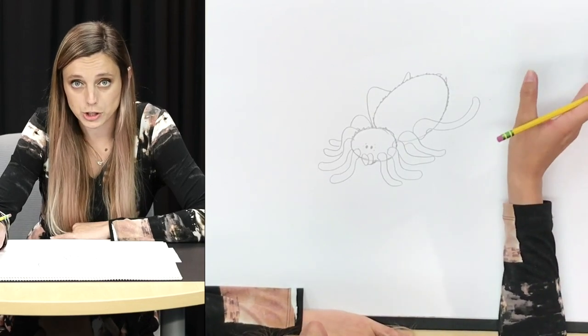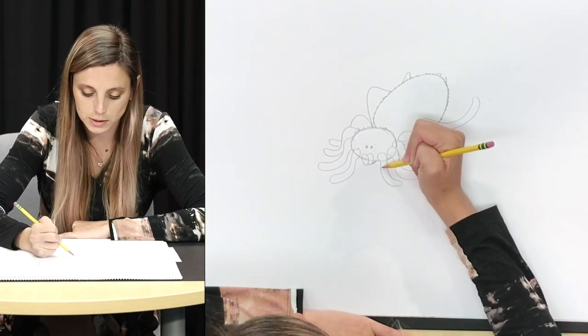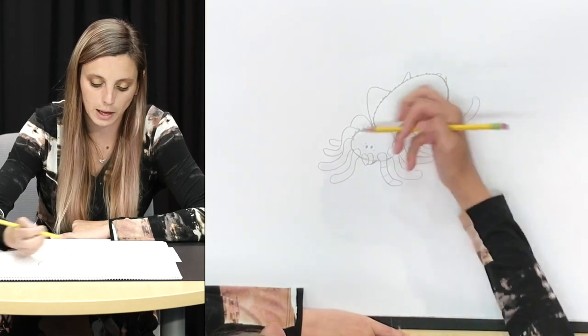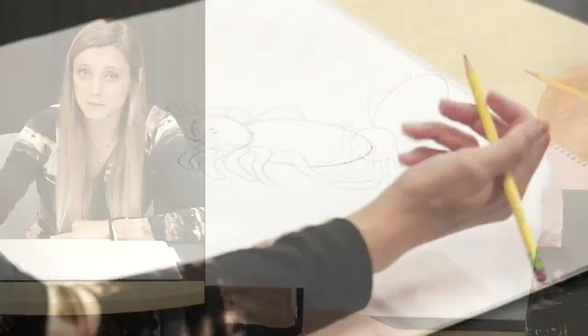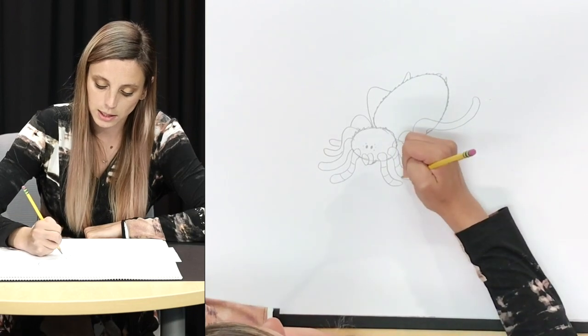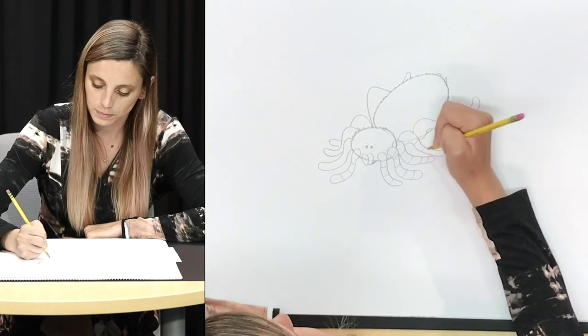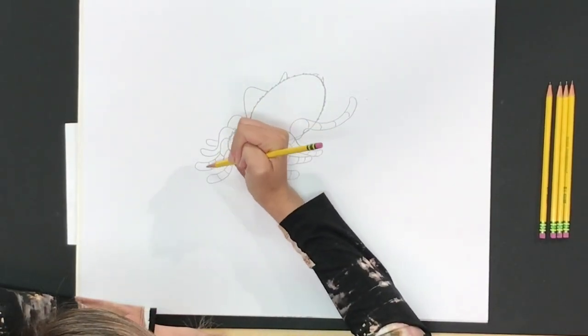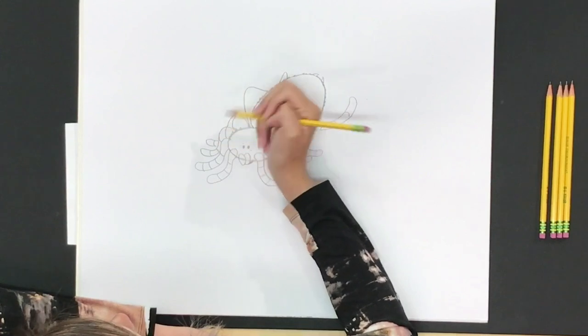Now the pedipalps of a tarantula including the Smith's red knee tarantula are broken into four sections. We can make these sections by just drawing a horizontal line along the length of our leg to make four sections and we're going to repeat this process on our other pedipalp. On the tarantula's eight legs there are actually five sections so we're going to use that same horizontal line technique except this time we're going to use four lines to cut the legs into five sections. And if on your back legs you can't show all the sections that's okay.